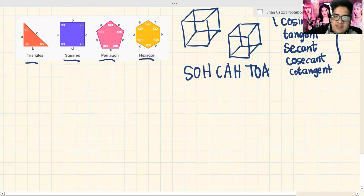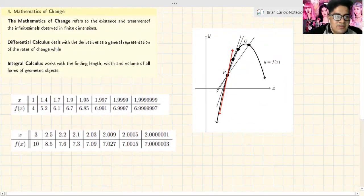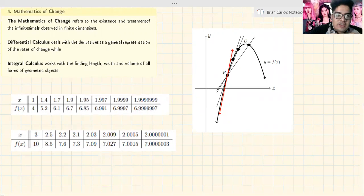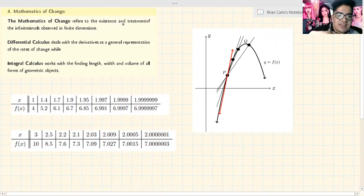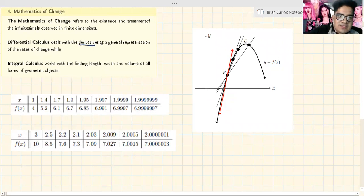Number four. The mathematics of change. The mathematics of change refers to the existence and treatment of the infinitesimals observed in finite dimensions. The terms are very profound - infinitesimals. But what I'm trying to say here is that this field just deals with change. Now we get into calculus. We have two types of calculus basically. Differential calculus deals with the derivatives.